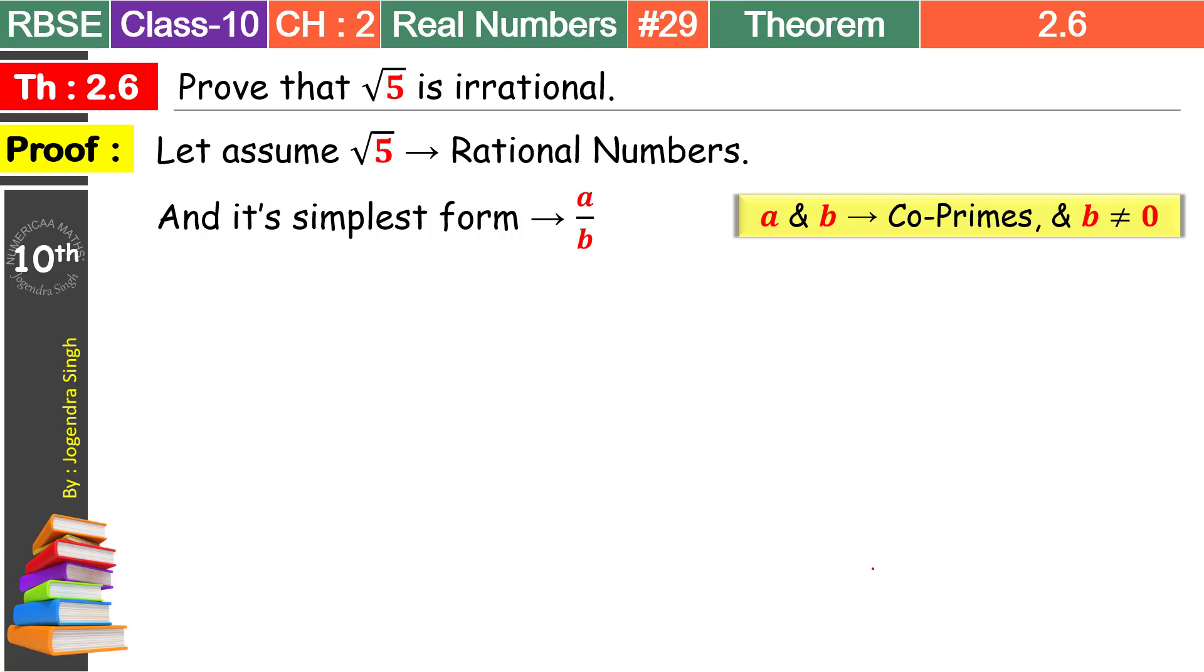A ke factor kuch bhi ho, B ke factor kuch bhi ho. Lekin dono mein same factor ek bhi nahi hoga. And in that case, b cannot be equal to zero. Chaliye toh humara root 5 ko a upon b ke equal kar lete hain. Under root ke sign ko hum remove karte hain. Toh humko milega 5 is equal to a square upon b square. By transferring all the things, we get 5b square is equal to a square. Just give a number to this equation. And the equation number is 1.